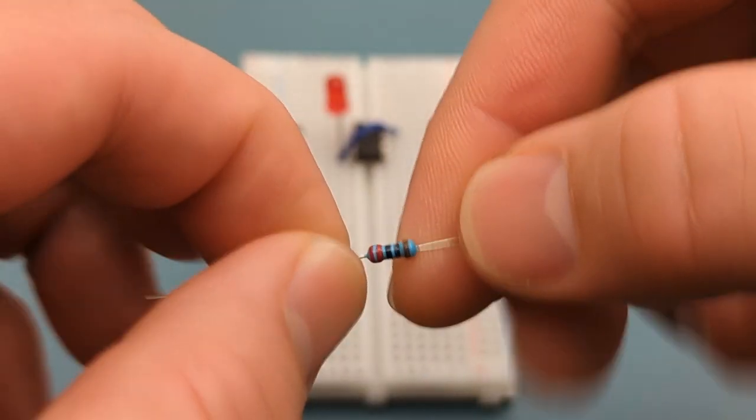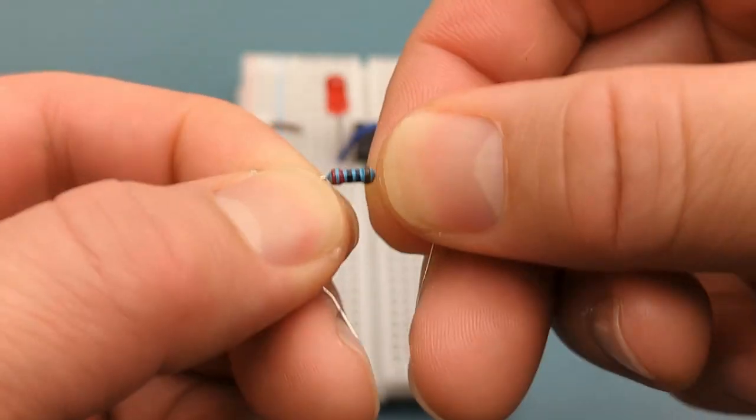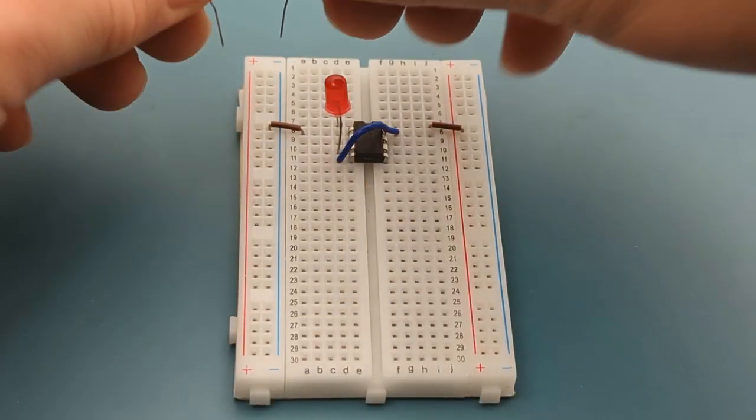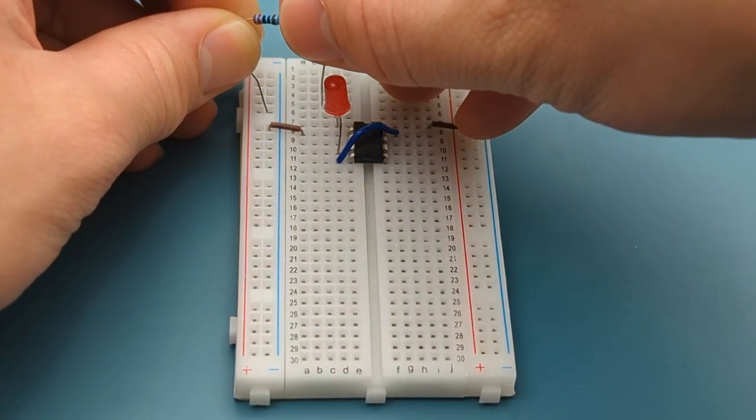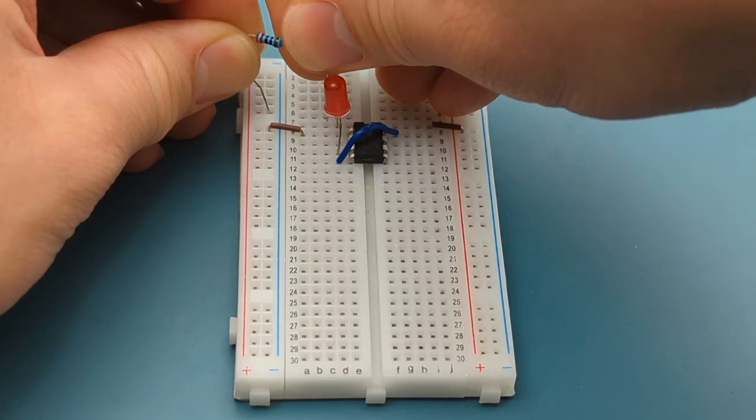Bend the ends of a 220 ohms resistor. Insert the 220 ohms resistor into the same row as the LED and the negative rail.